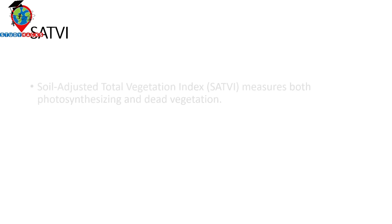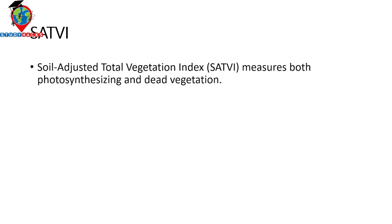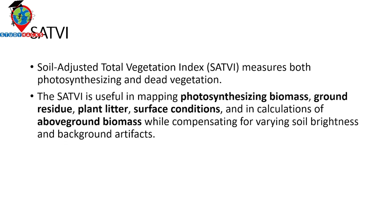So first of all, what is the Soil Adjusted Total Vegetation Index? Basically it measures both photosynthesizing and dead vegetation at the same time. There are a lot of methods and uses for this index, such as mapping photosynthesizing biomass, ground residue, plant litter, and surface condition, as well as calculating above-ground biomass while compensating for varying soil brightness and background artifacts.